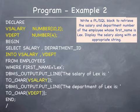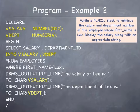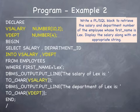On this slide is another example. The program is to write a PL/SQL block to retrieve the salary and department number of the employee whose first name is Lex. The salary and the department ID values are then displayed on the screen with appropriate strings. For the two columns there are two memory variables being declared: V_salary and V_DEPT. In the body of the program is the select statement: select salary, department_ID into V_salary, V_DEPT from employees where first name equals Lex. This is then followed by two DBMS output line statements that display the salary and department ID values with appropriate strings.